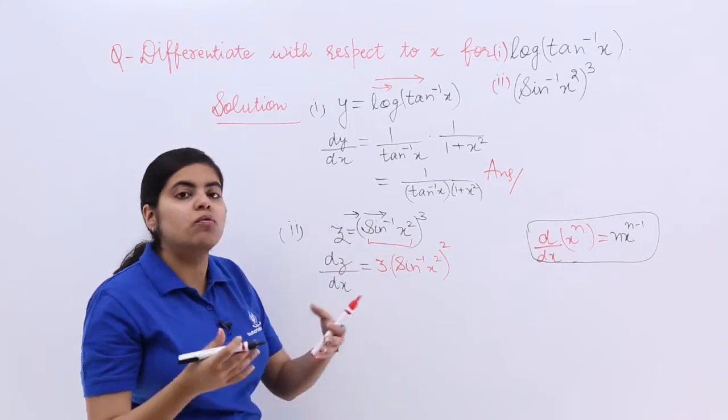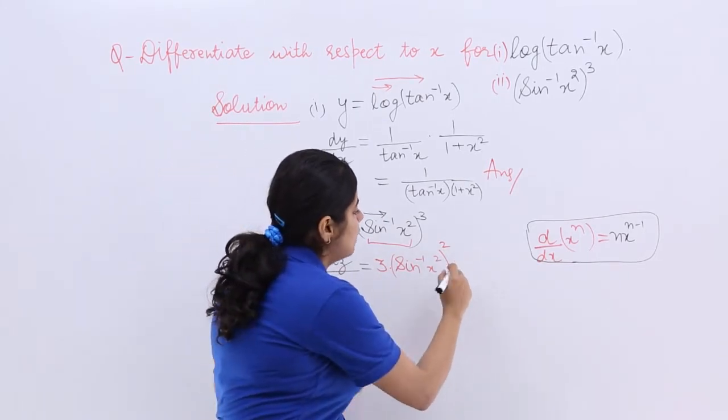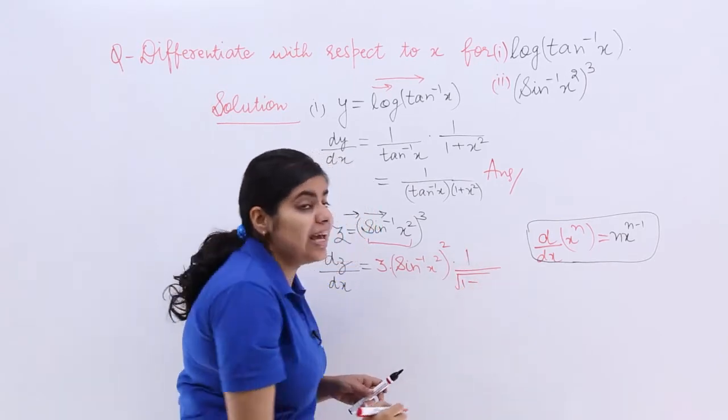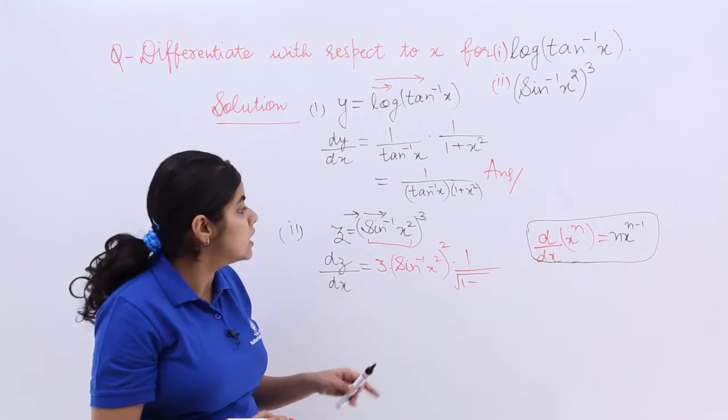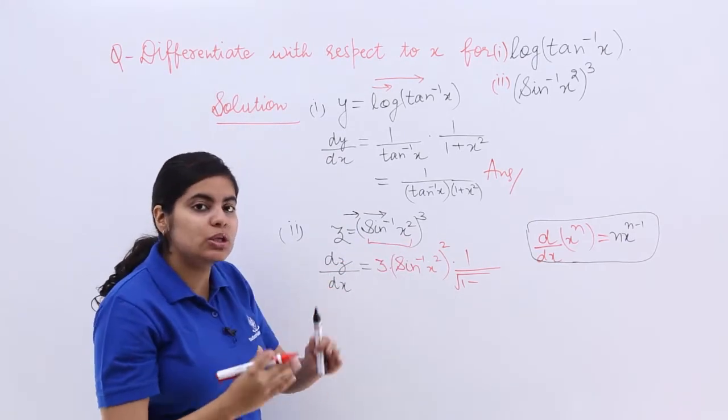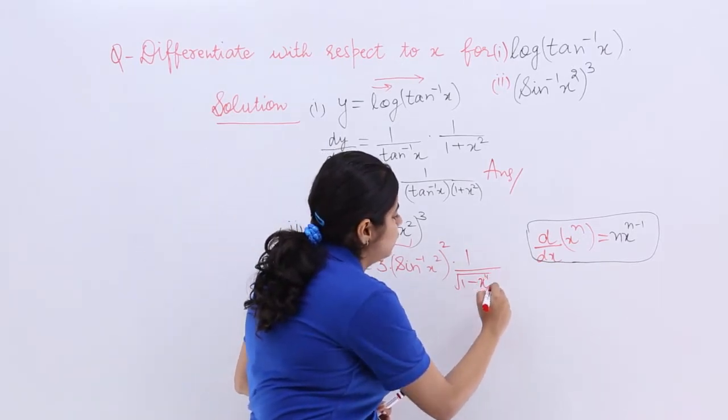So it is sine inverse. What is the differentiation of sine inverse x with respect to x? It is nothing but 1 upon under root 1 minus x square. So now what is x? It is x square already. So x square is square. So it is x raised to the power 4.